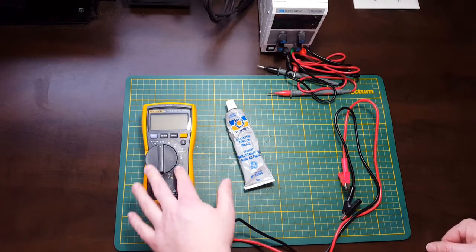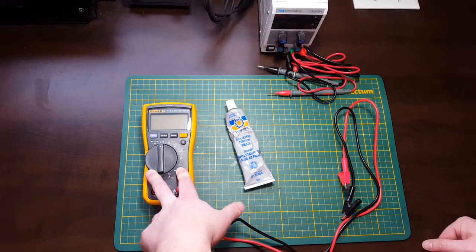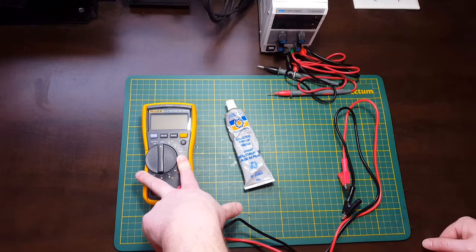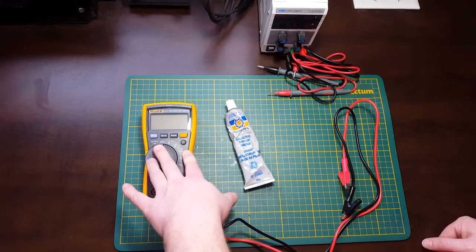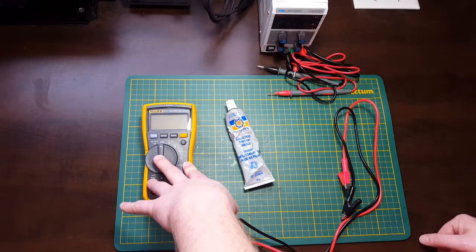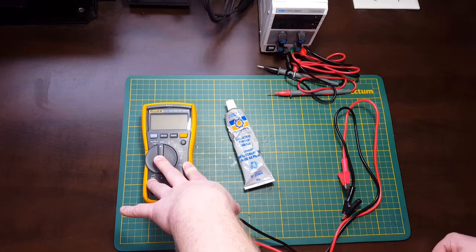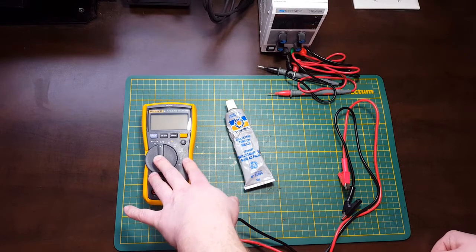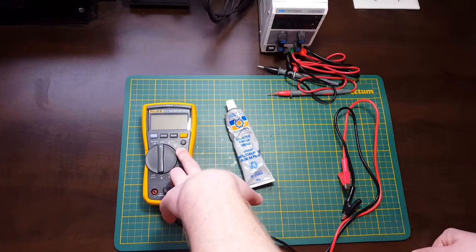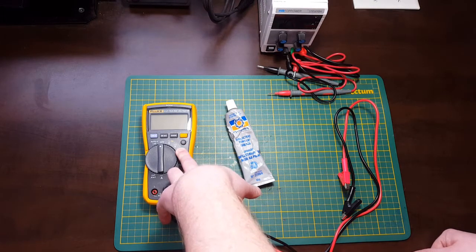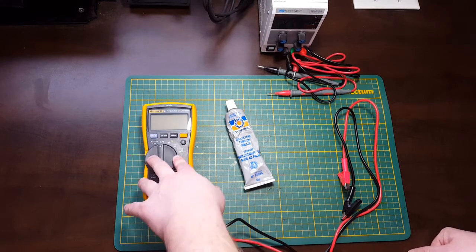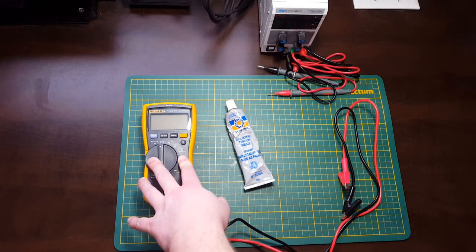Multimeters are fantastic at measuring all kinds of different things, but when it comes to ohms and milliohms specifically, they are terrible. Even this Fluke here - the specifications say it can go down to 0.1 ohm, that's a hundred milliohms, and that's not good enough for what we want to test here. But what it is fantastic at testing is millivolts. It can actually go down to one millivolt, that's a thousandth of a volt.